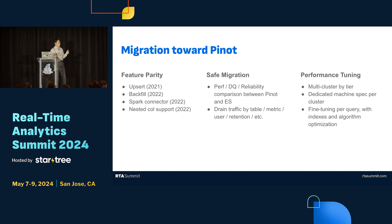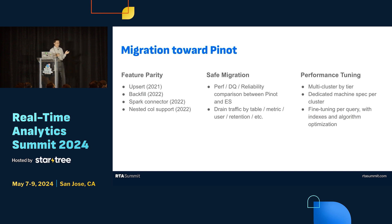The platform team worked with the metrics platform team to look at what features they needed. We identified several key things including upsert, backfill, and a Spark connector — not only to ingest data into Elasticsearch but also to take snapshots of Elasticsearch data into the data lake. There was also nested column support. Over the year, we actually contributed these features to Pinot to achieve feature parity.